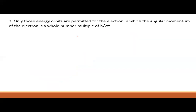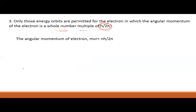Only those energy orbits are permitted for the electron in which the angular momentum of the electron is a whole number multiple of h upon 2π. Thus, the angular momentum of the electron is mvr = nh/2π.